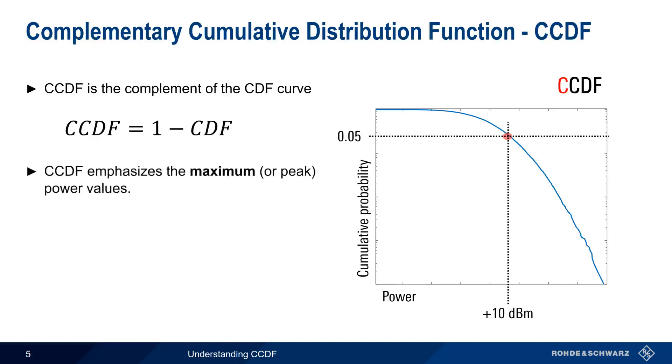For this reason, we say that CCDF emphasizes the maximum or peak power values, since it tells us what percentage of time the signal's power is at or above a certain value. And because we're usually more concerned with maximum power values than minimum power values, CCDF is the most common and the most important of the three statistical measurements we've just discussed.